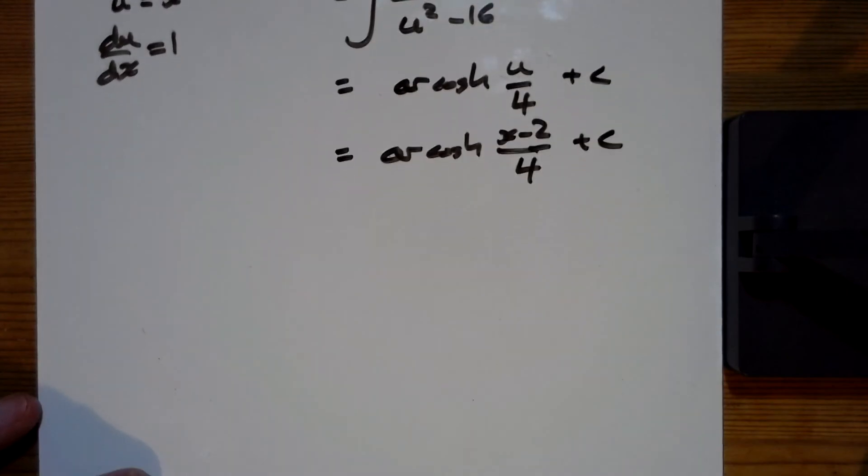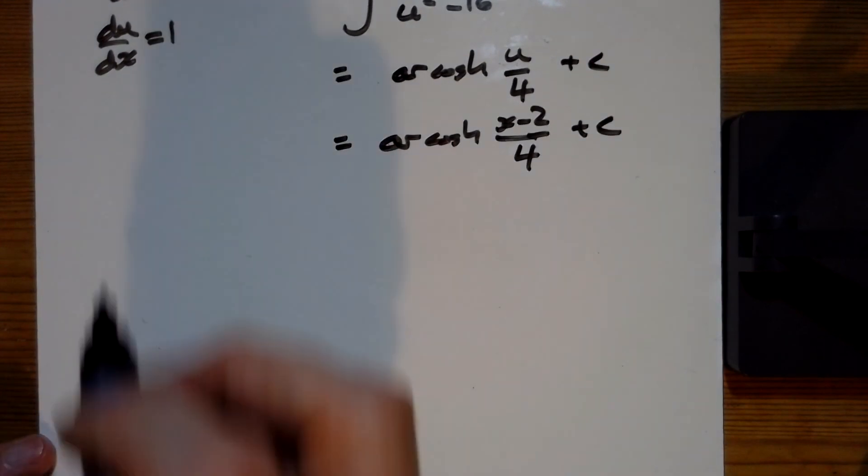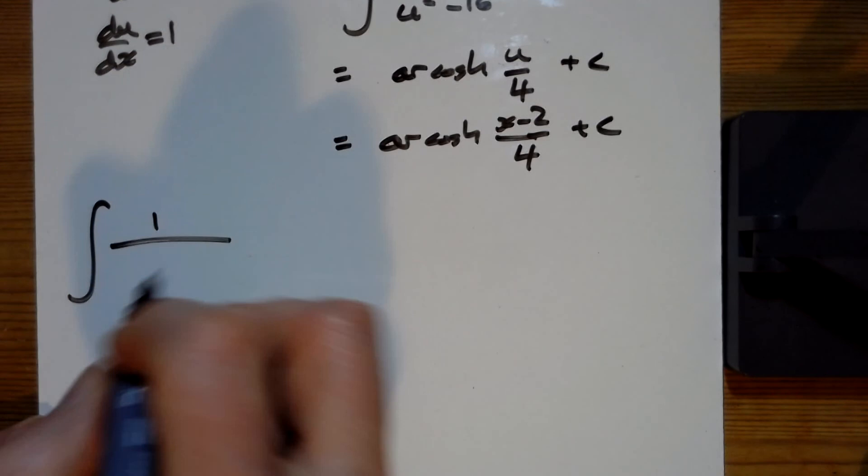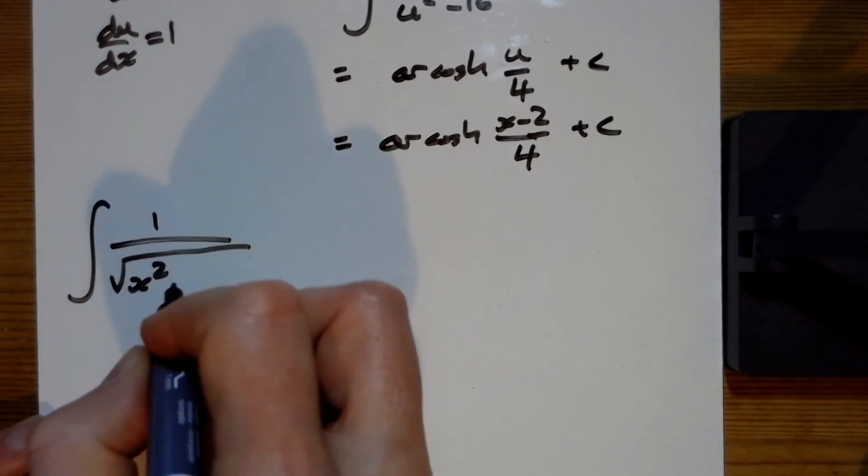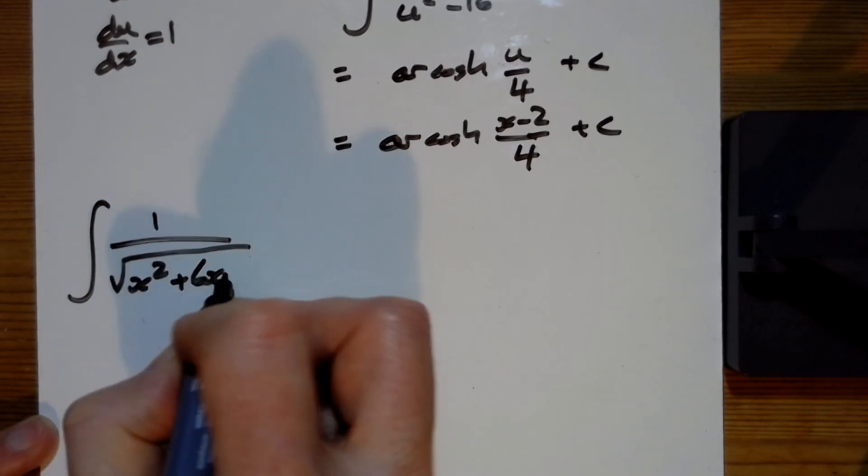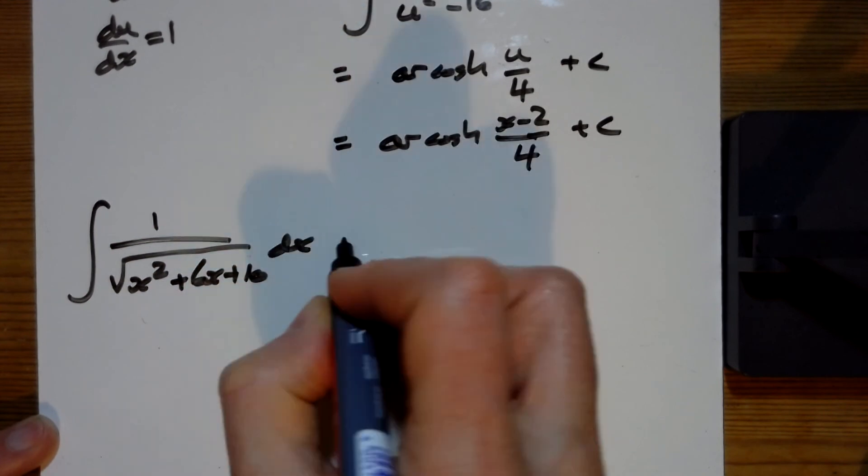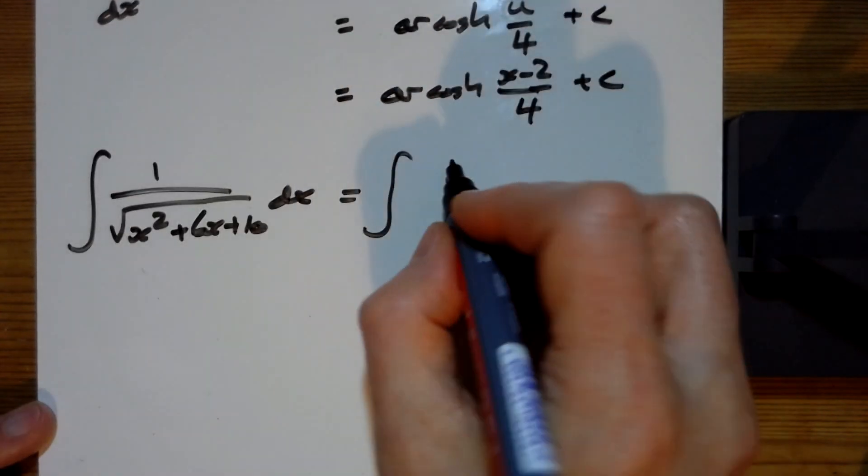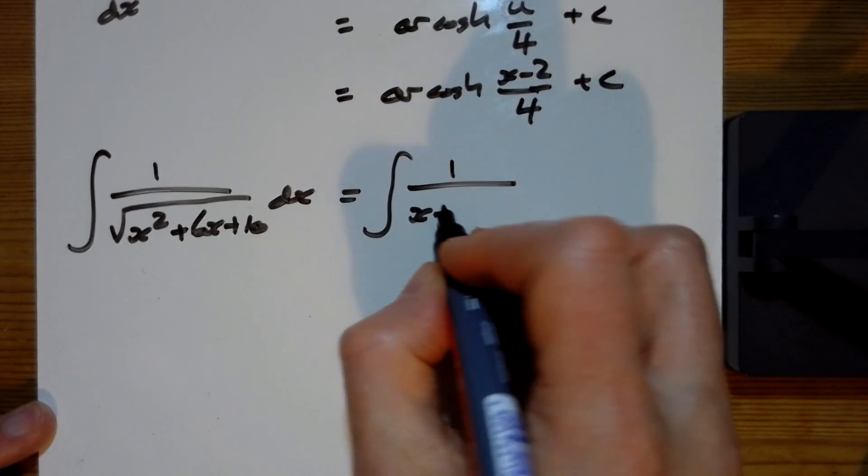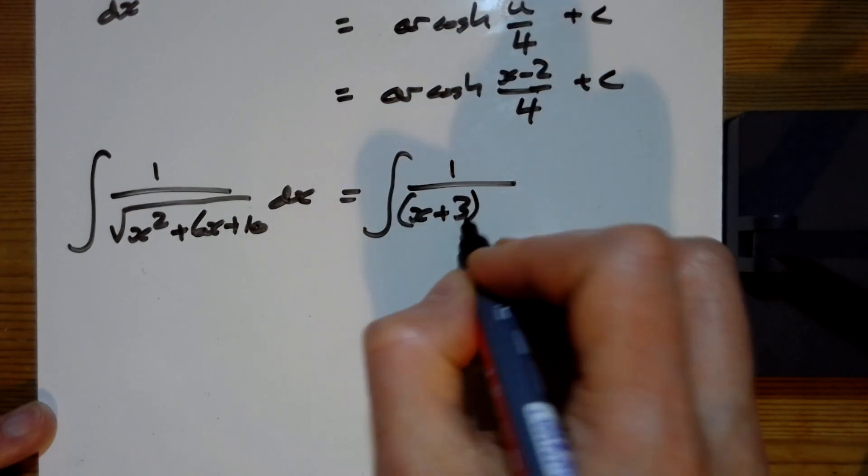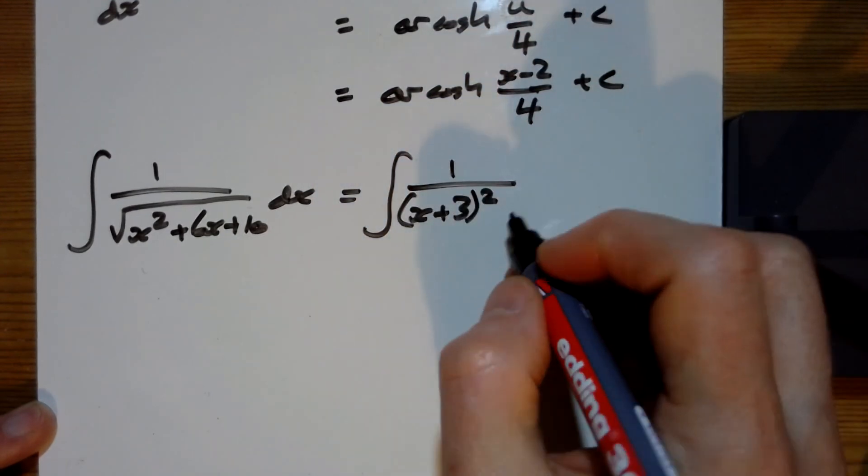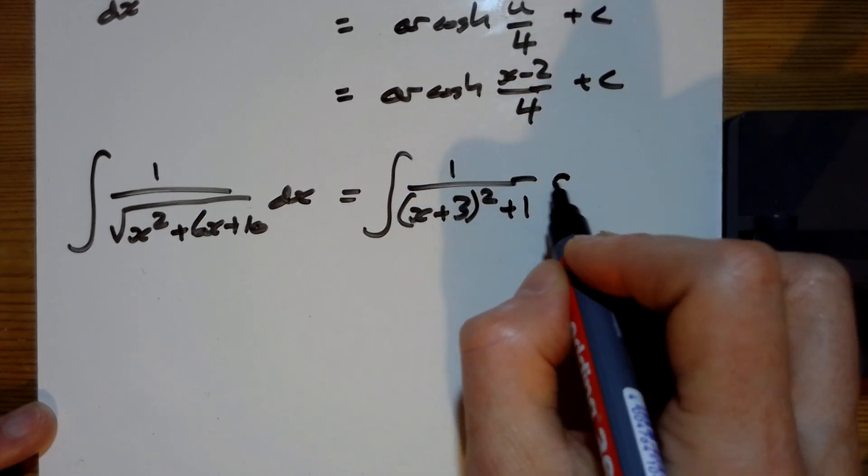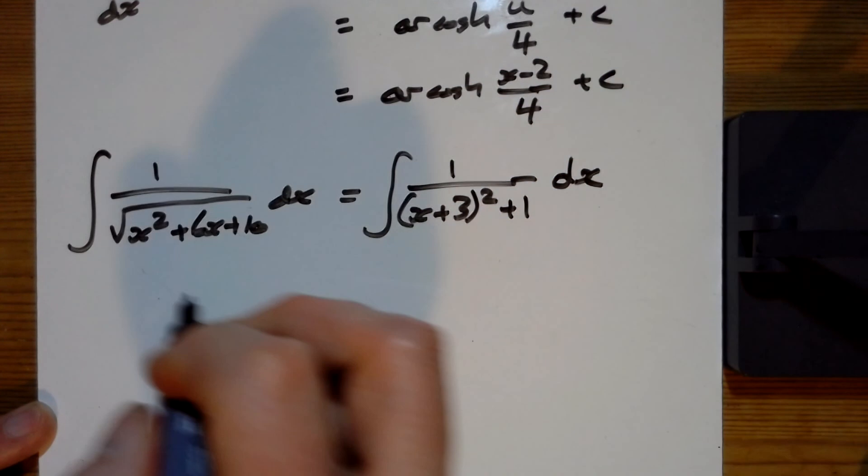Part b is exactly the same idea. This time we've got x squared plus 6x plus 10, so completing the square there we've got 1 over x plus 3 all squared, take away 9, add 10 means we've got a plus 1 on the end there, that's a dx still there.